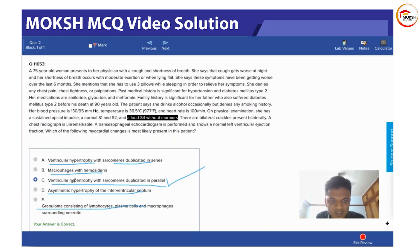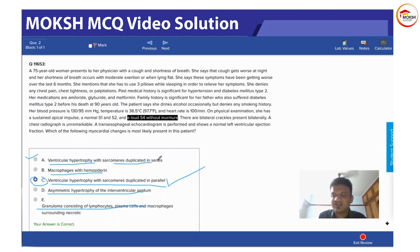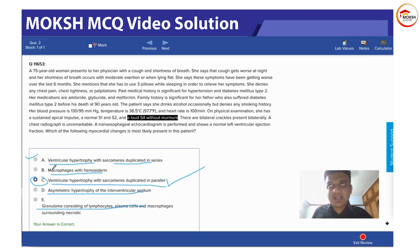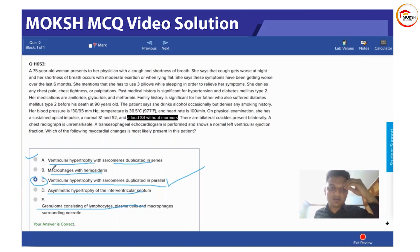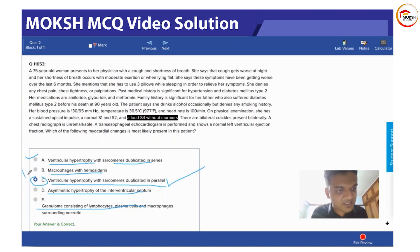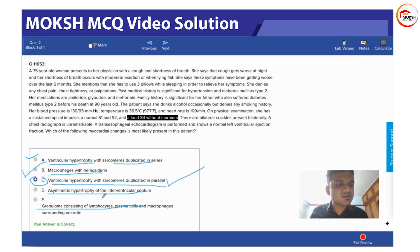So the answer is sarcomeres in parallel — concentric hypertrophy. The first option, sarcomeres in series, would be a case of a dilated ventricle — heart failure. Macrophages with hemosiderin are called heart failure cells. Macrophages engulf red blood cells, which contain iron, leading to hemosiderin-laden macrophages. These are classically called heart failure cells and are found in heart failure.